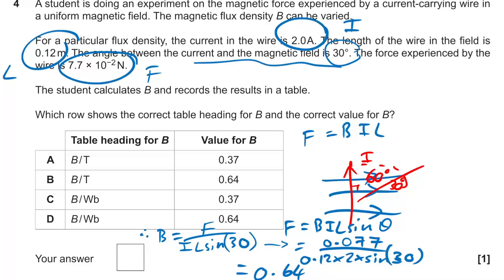That gives us 0.64, and flux density is measured in Tesla — webers or WIBAs are for flux. So the answer is B.